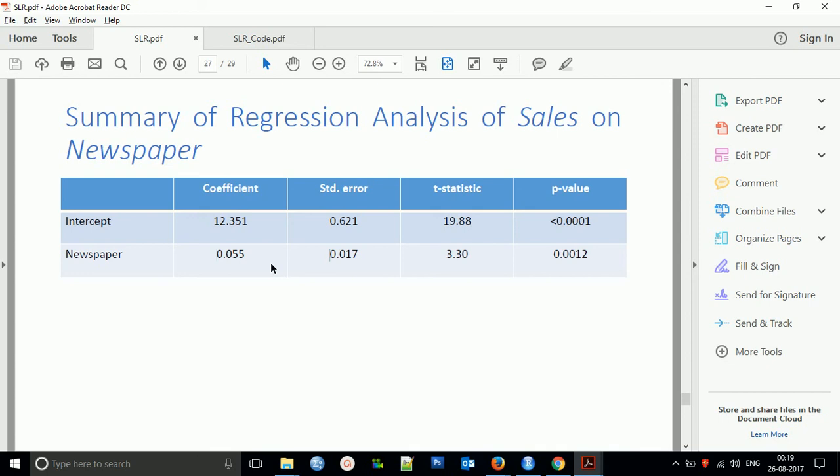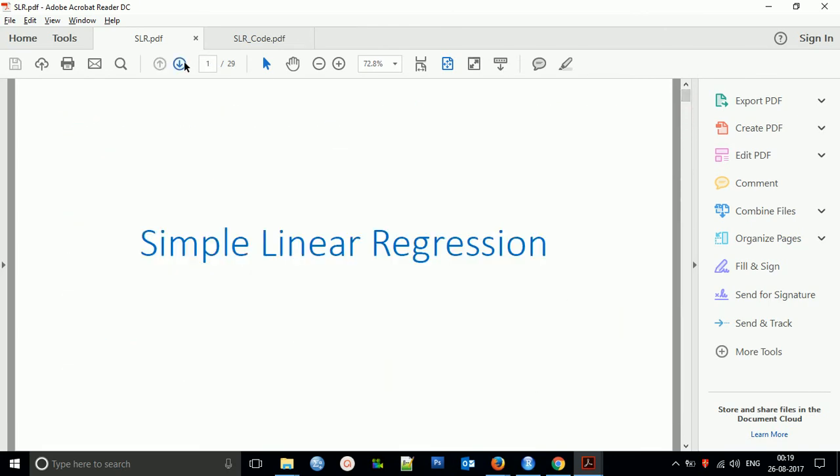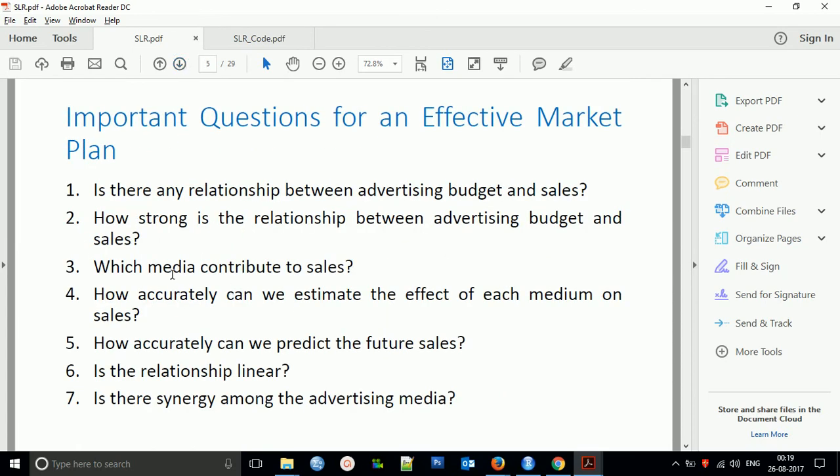Now, to answer the questions we discussed earlier about the quantity of sales: we understand that TV is creating a larger amount of sales compared to the others. To understand the estimated effect of each media on sales, predict future sales, and understand the relationship and synergy among different types of media combinations, we have to use multiple linear regression. We will understand that in the next video. Thanks for watching.